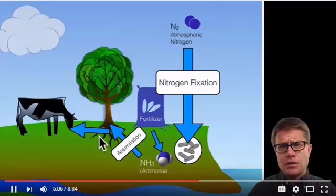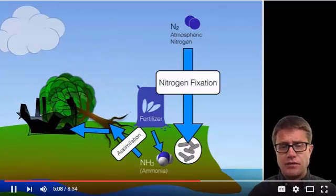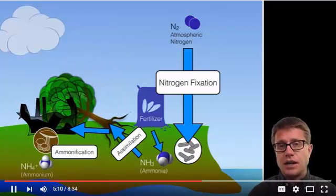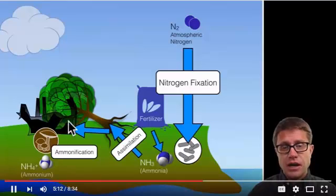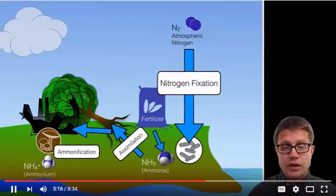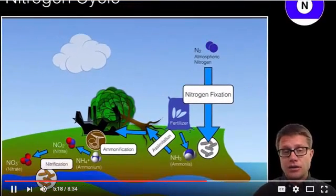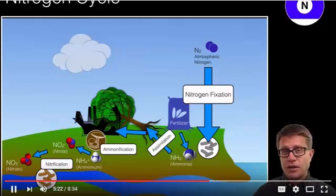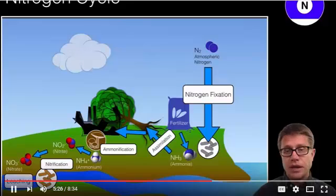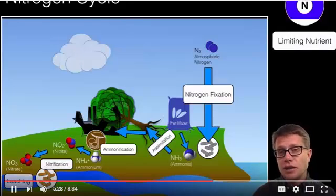Now how does it get returned back to the atmosphere? It is kind of complex. What happens is we have death. We then have decay and so bacteria or fungi are going to convert that nitrogen into ammonium. And then we have other bacteria, nitrifying bacteria that are going to convert that ammonium into nitrites and then nitrates. Now the nitrates can be leached. They can move into the water supply of our planet. Remember nitrogen is a limiting nutrient.